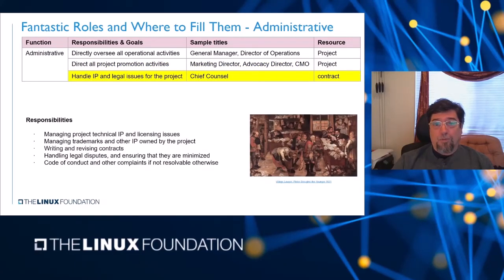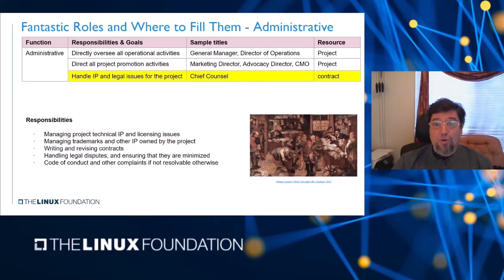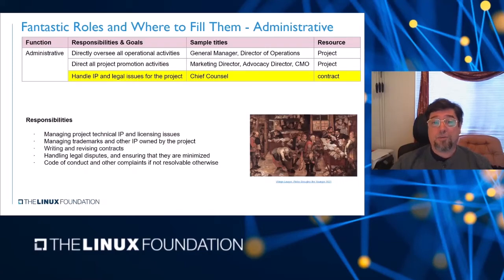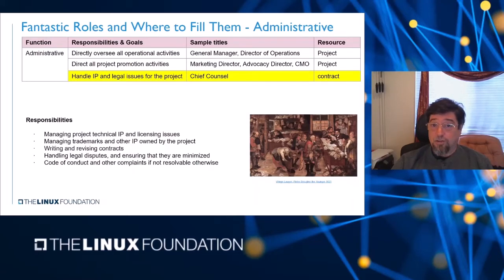I think we all know the legal role, although we sometimes go to great lengths to avoid them — they can be the nicest folks in the world. I'm going to say hi to Mike Scott and Steve at the Linux Foundation. The legal role is nearly always contracted out to a legal firm, except in the case of a large foundation like the Linux Foundation that might have its own in-house legal staff. The legal counsel for a project is responsible for the project's technical intellectual property and licensing issues, managing trademarks and other IP owned by the project, writing and revising contracts, handling legal disputes, ensuring that legal disputes are minimized, handling code of conduct complaints not resolved by any other processes, and doing any other legal activities that need to be done.